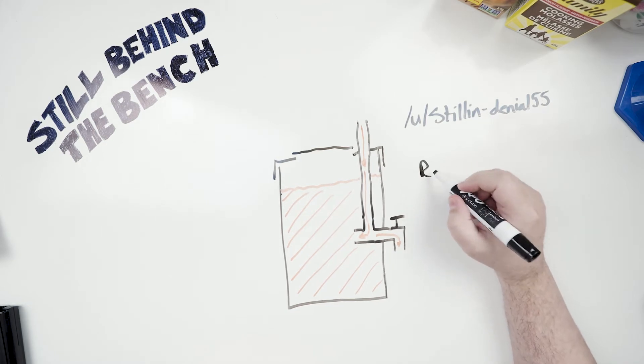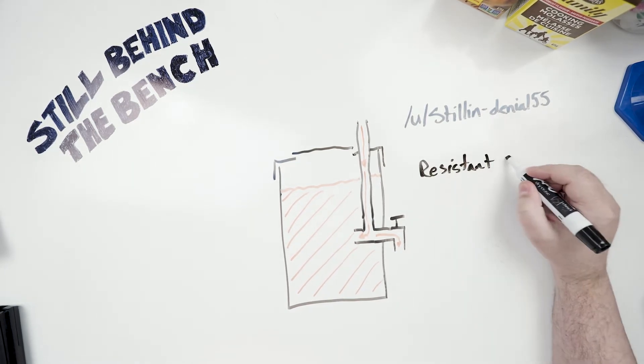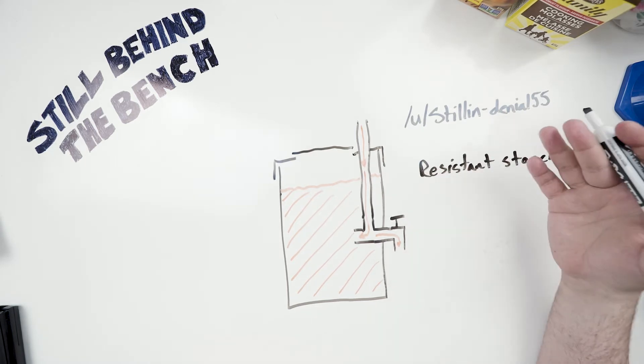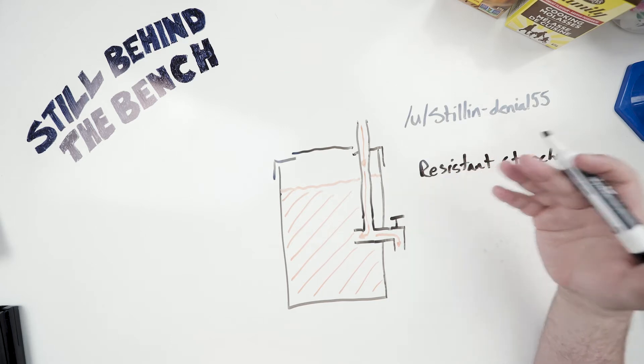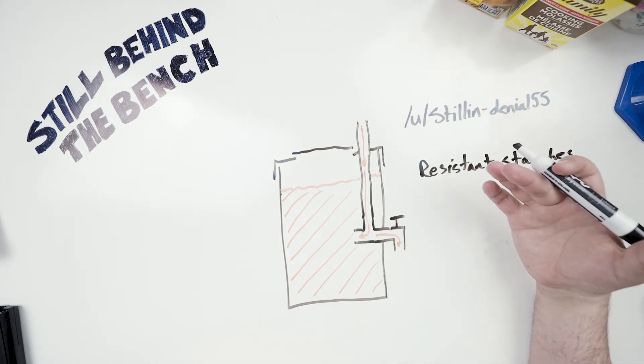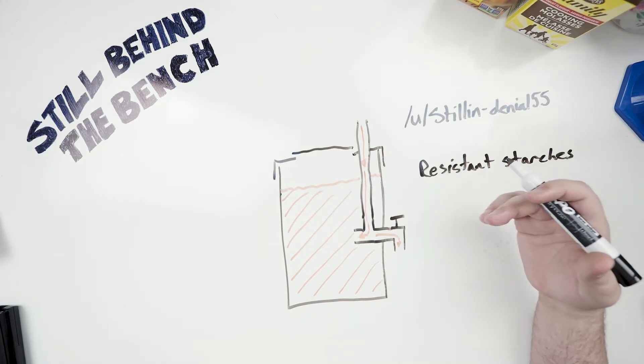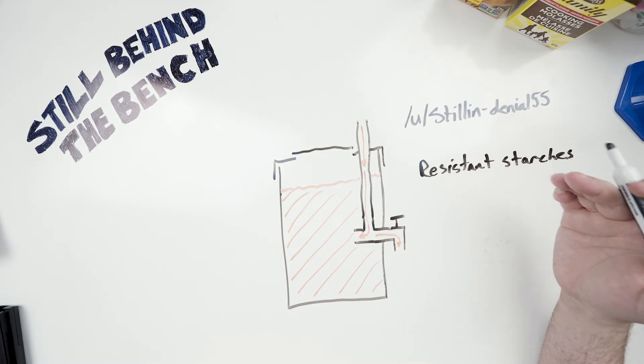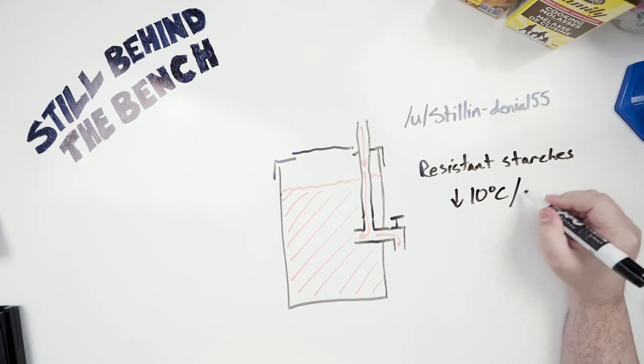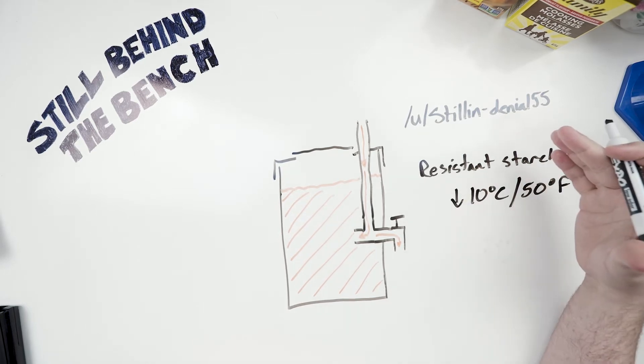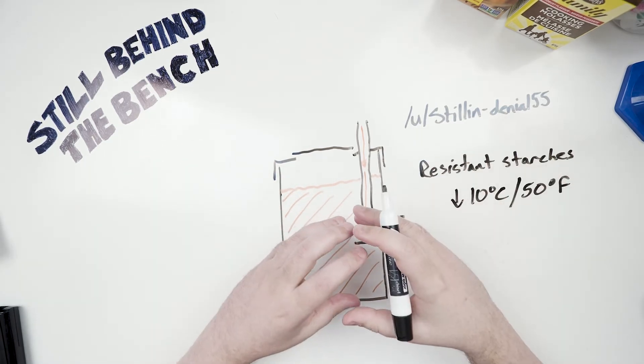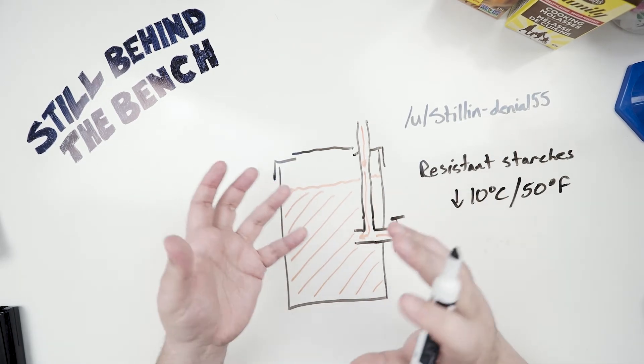Another thing you can do is add in what are called resistant starches. They are particularly good at making butyric acid, or I should say microbes like using resistant starches and the most common result is butyric acid. A good way to make resistant starches is you take something like a potato or other really starchy food, throw it in the microwave, cook it really hot and you pull it out and you immediately put it in the fridge or the freezer. You want it to rapidly drop down below 10 degrees celsius or 50 degrees fahrenheit.